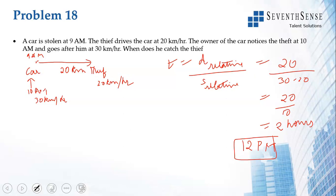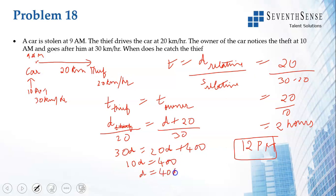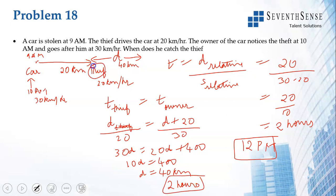Verifying with method 1 — equating time: let d be the distance the thief travels from 10 am onward. Then d/20 = (d + 20)/30. Cross-multiplying: 30d = 20d + 400, so 10d = 400, d = 40 km. The thief covers 40 km at 20 km/h in 2 hours. So the owner catches the thief 2 hours after 10 am, which is 12 pm.